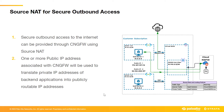Let's now discuss source NAT functionality on Cloud NGFW. By default, source NAT is enabled on Cloud NGFW creation, and source NAT is performed on outbound internet traffic. For example, if a web server wants to access internet applications, the traffic is redirected through Cloud NGFW for inspection, and Cloud NGFW performs source NAT using the front-end IP address before redirecting the traffic towards the internet.